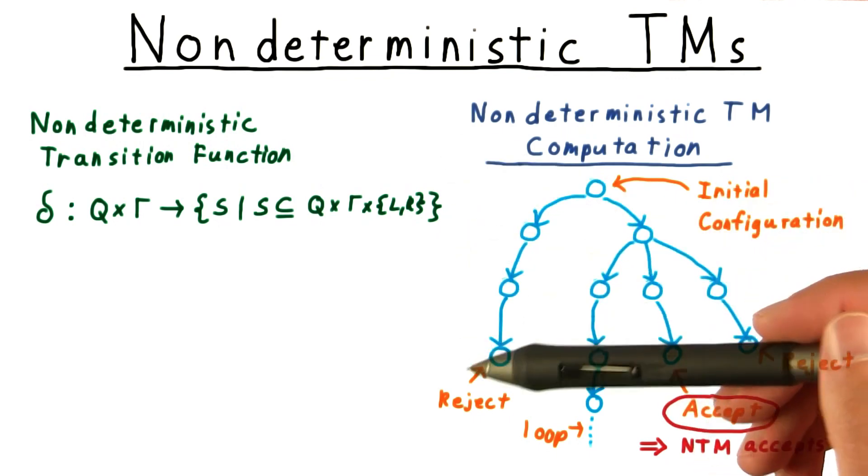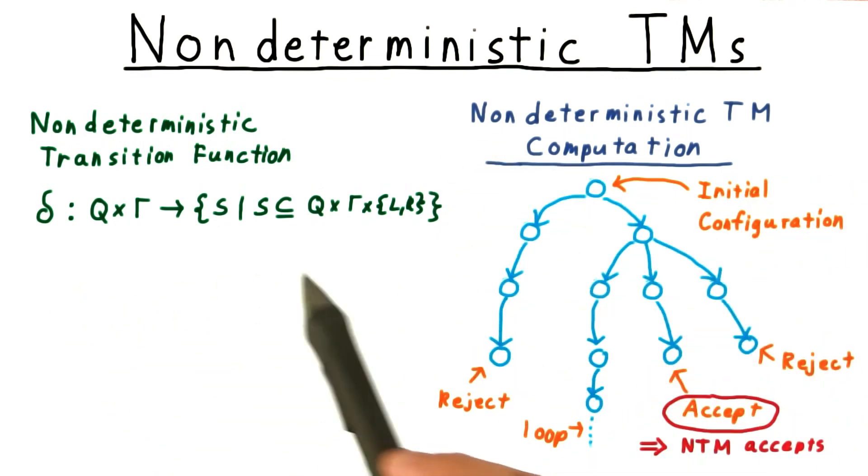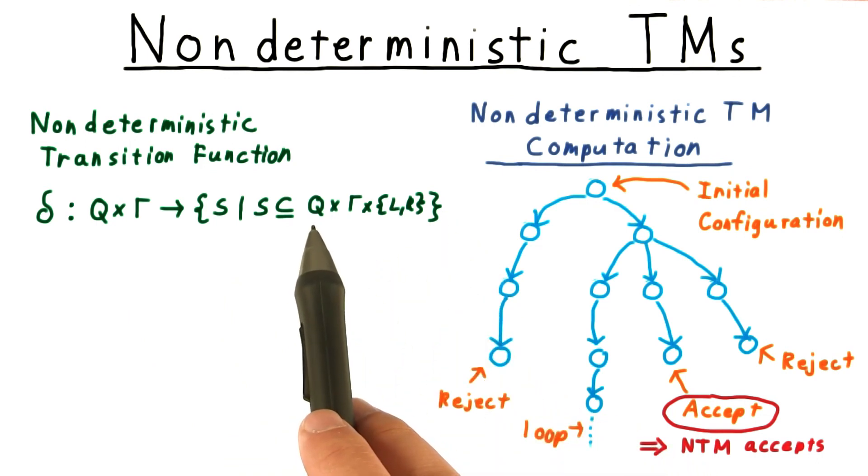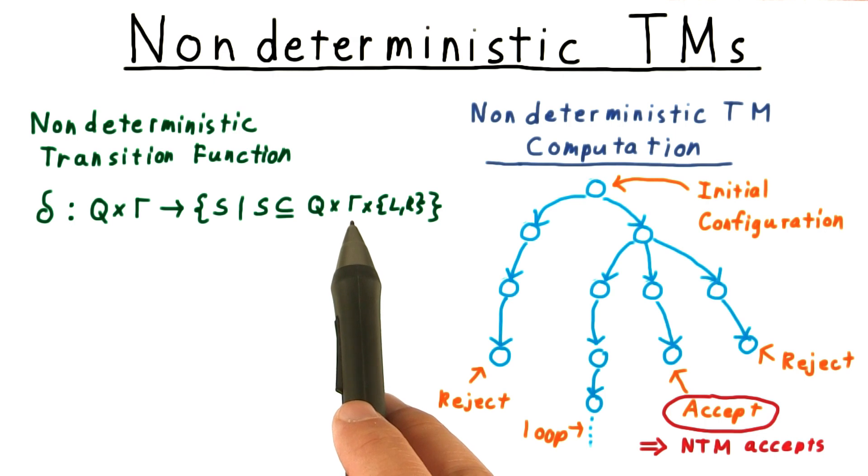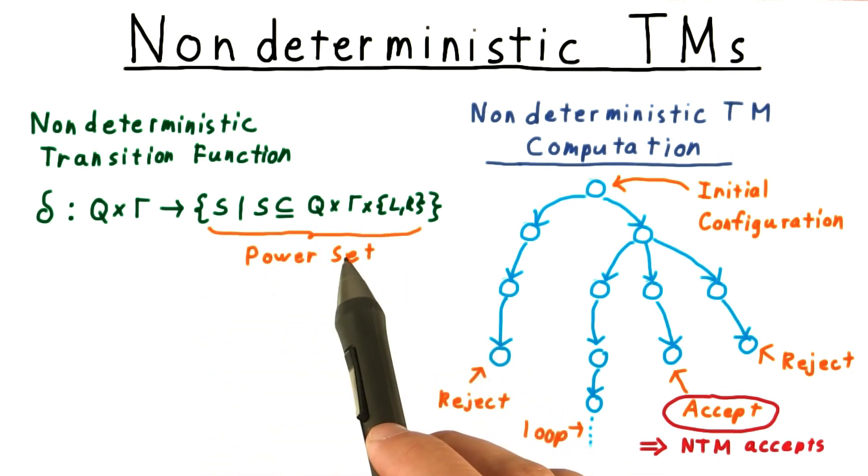The only change to the seven-tuple definition of the deterministic machine that we need to make is to modify the transition function. The range is no longer a single state, tape symbol being read, direction tuple, but a whole collection of such possibilities. The set of all subsets is often called a power set.